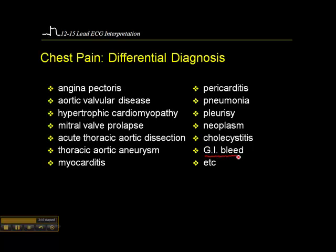GI bleeds may present similarly to acute myocardial infarction. It's also possible that someone with a GI bleed who is hypovolemic may experience coronary ischemia because of blood loss — so they may have a GI bleed and also be having myocardial ischemia. Anyone who presents with abdominal discomfort may also be having an infarct. The purpose of going through this long list is to critically think about whether your patient is actually infarcting or not.